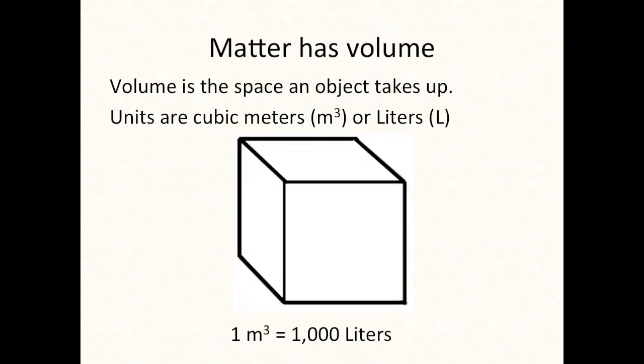Matter has volume. Volume is the space an object takes up. Here's the simplest example of volume of a cube. The units for volume that we use in science are cubic meters or liters. There's a correlation between the length measurements meters and liters. One cubic meter can hold a thousand liters.